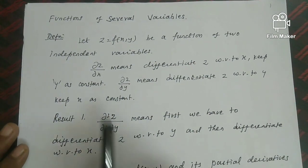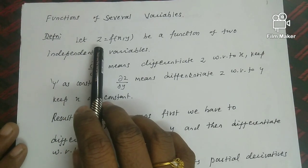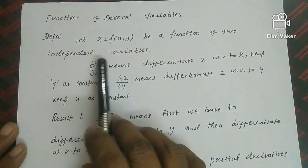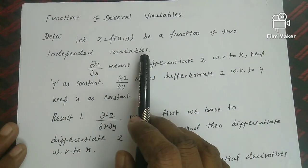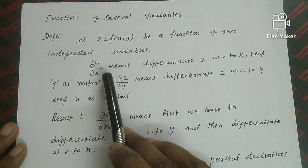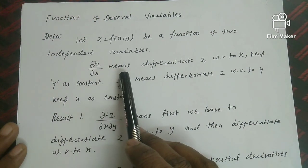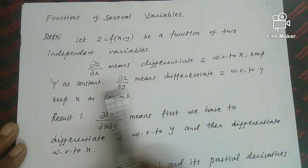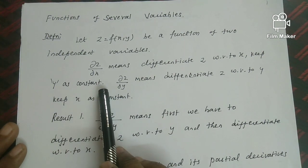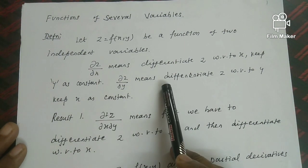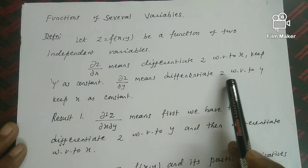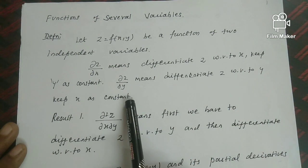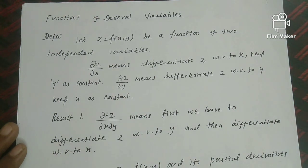Let z equal to f(x, y) be a function of two independent variables. Then ∂z/∂x means differentiate z with respect to x, keeping y constant. ∂z/∂y means differentiate z with respect to y, keeping x constant.